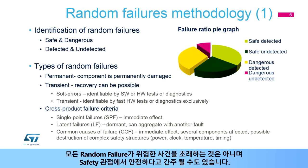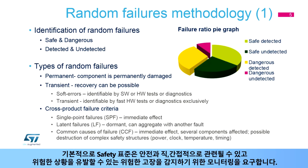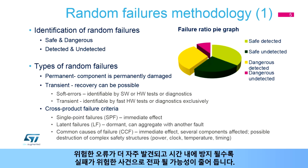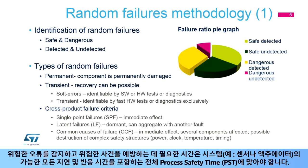Not all random failures result in a hazardous event, and they may even be considered safe from a safety point of view. Safety standards require monitoring to detect dangerous failures that may be directly or indirectly related to safety and have the potential to cause a dangerous situation. Both safe and dangerous errors can either be detected or stay hidden and undetected by the system. The time needed to detect dangerous errors and prevent hazardous events must fit into the overall process safety time, PST, which includes all the possible delays and reaction times for the system, for example, on sensors or actuators.